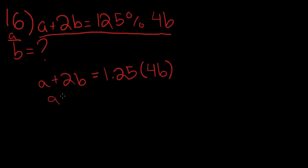So, a plus 2b will be equal to 4 times 1 is 4, 4 times 0.25 is 1, 4 plus 1 is 5b. And so, a is equal to 3b, and we need to find a over b. If we divide both sides by b, then we'll get a over b is equal to 3. And that is the correct answer.